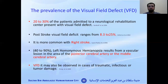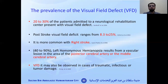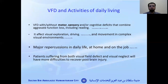Research shows that the prevalence of visual field defect is 20 to 30 percent in neurological cases in general and 8 to 25 percent for stroke survivors. It is more common when the injury is on the right side of the brain. It can still happen if somebody has a tumor, infections, or any traumatic brain injury.